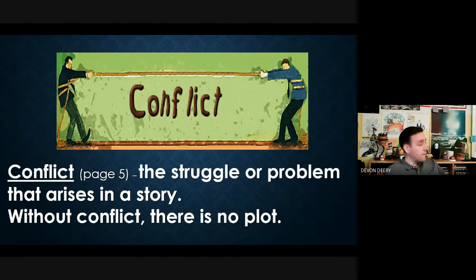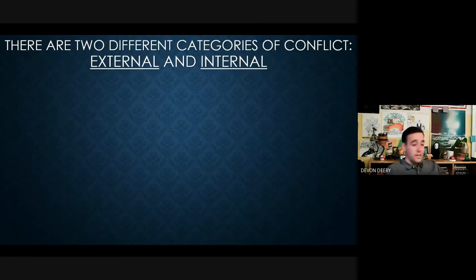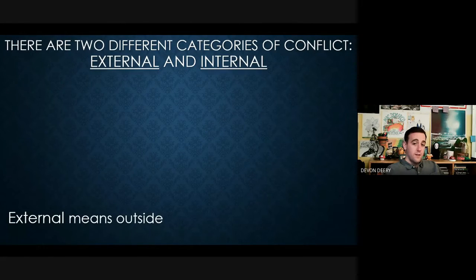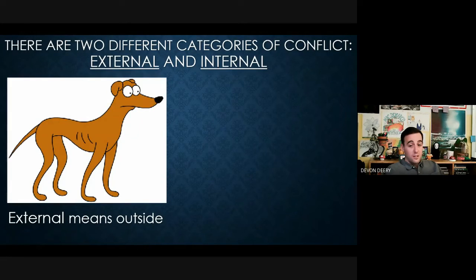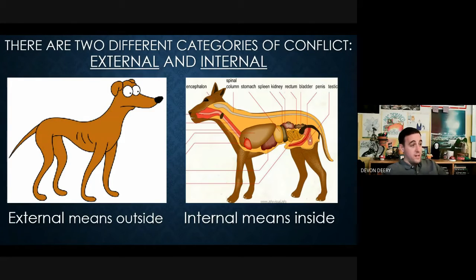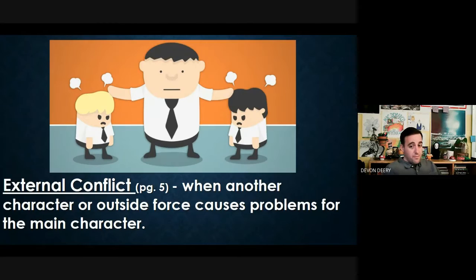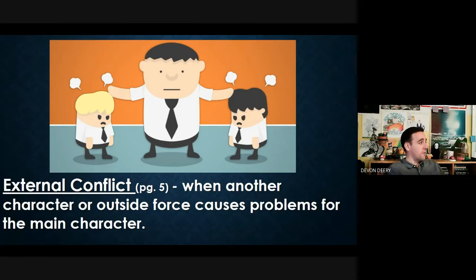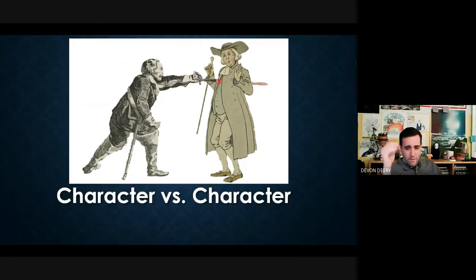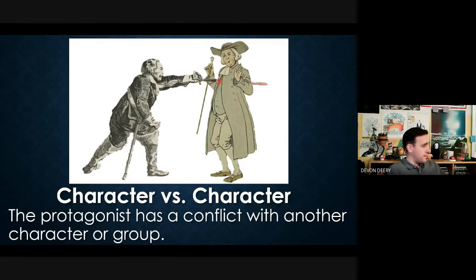There are two categories of conflict: internal and external. External means outside, internal means inside. External conflict is when another character or outside force causes problems for the main character. The first type is character versus character — the protagonist has a conflict with another character or group. For example, in 'All Summer in a Day,' Margot versus William and the other school children is character versus character.